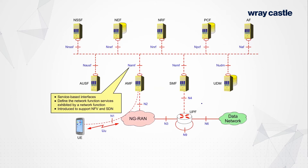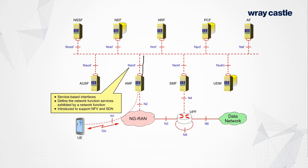We've got more or less the same things, so you can see the AMF, SMF, and UDM — the functions are certainly present but the manner in which they are connected is somewhat different. There's a dotted line which appears like a bus. If you think of a data bus or LAN networking, all of the network functions seem to be connected to all of the others. It's a good idea to look at this alongside the reference point architecture — for example, the AMF and the UDM were interconnected on the N8 interface, so the AMF is connected through that bus.